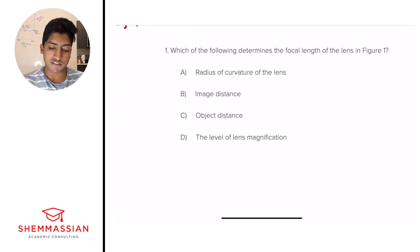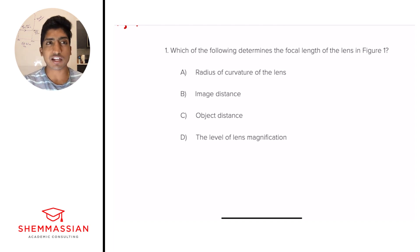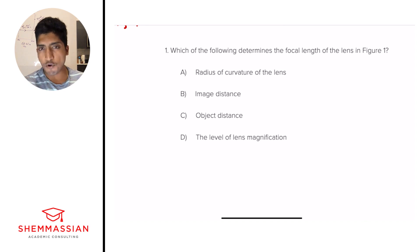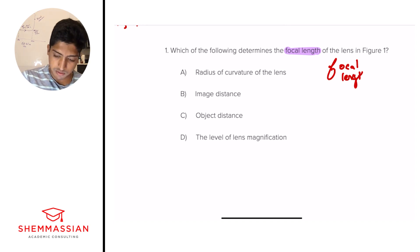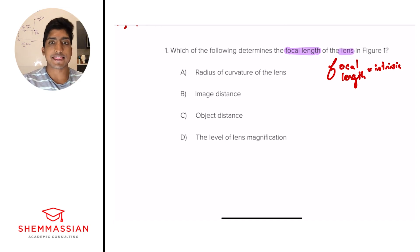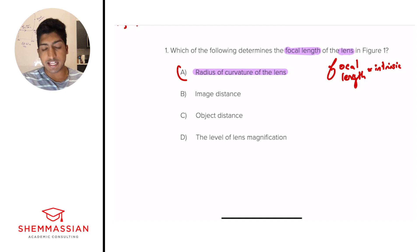Which of the following determines the focal length of the lens in figure one? Is it A, the radius of curvature of the lens; B, the image distance; C, the object distance; or D, the level of lens magnification? This is essentially a standalone question. Focal length is an intrinsic property of the lens — if you change the lens, you change the focal length. The defining property of the lens is the radius of curvature, so A is our answer.